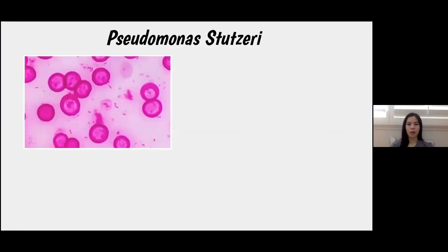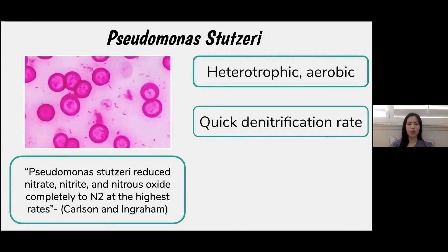We prototyped our model after researching three key components for our project. The first area of research was deciding which bacteria to use. We decided to use Pseudomonas stutzeri because it is heterotrophic and aerobic. It also has been proven to have quicker denitrification rates and works in a wider range of conditions than other bacteria.